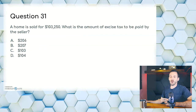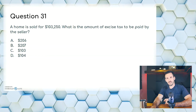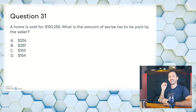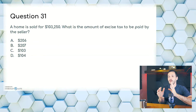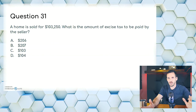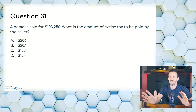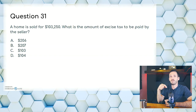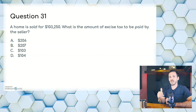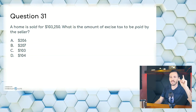Question thirty-one: a home is sold for $103,250. What is the amount of excise tax to be paid by the seller? A, $206; B, $207; C, $103; or D, $104. Math questions are a reliable way to score well on this test. Excise tax is $1 for every $500. $103,250 ÷ $500 = $206.50. You round up — answer is B, $207. They try to trick you there: always round up with excise tax.